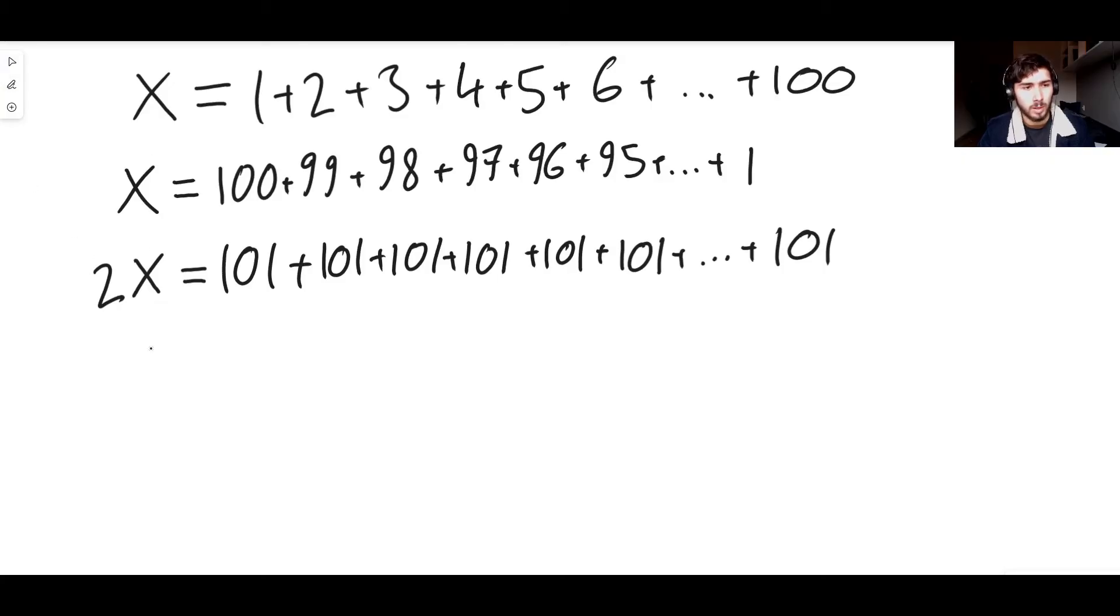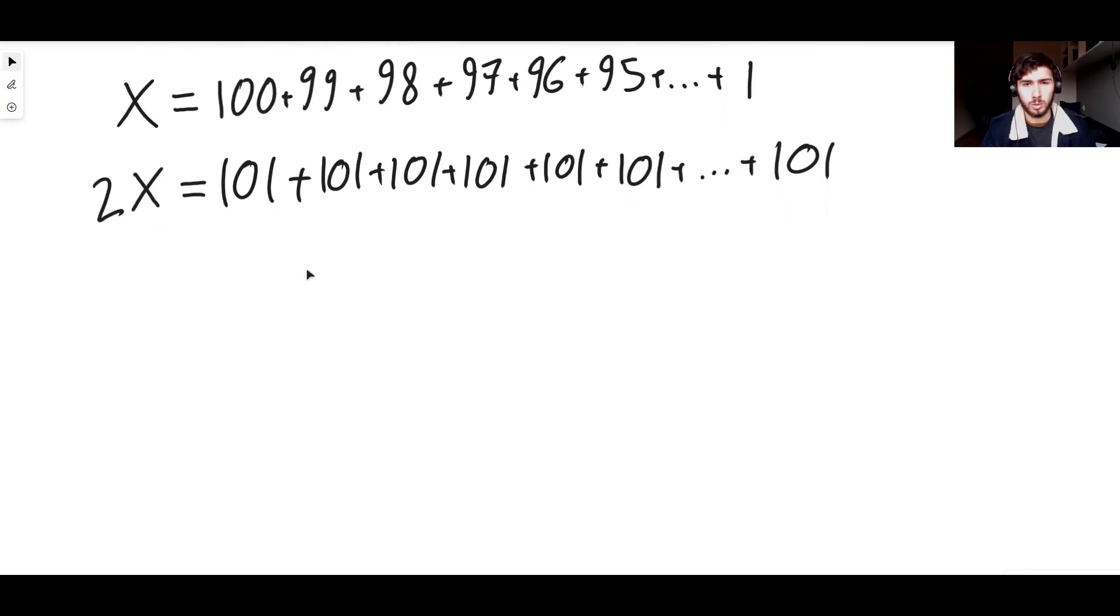Finally, we get 100 plus 1, which is clearly 101. And so what Gauss realized was that 2 lots of the answer that he's looking for, 2 lots of x, is simply equal to 101, 100 times, which is 100 times 101.